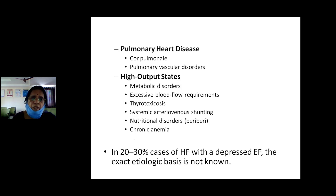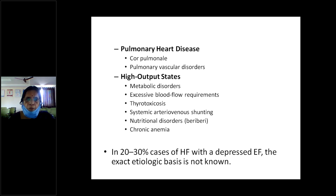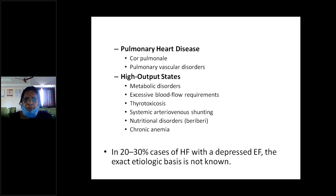Other conditions include cor pulmonale — right heart failure secondary to extensive lung disease such as pulmonary infarction, pulmonary arterial anomalies, or COPD — and pulmonary vascular disorders. High output states such as anemia, thyrotoxicosis, or arteriovenous shunting can also produce high output heart failure with a normal ejection fraction. In 20 to 30% of cases of heart failure with a depressed ejection fraction, the etiology may not be known.